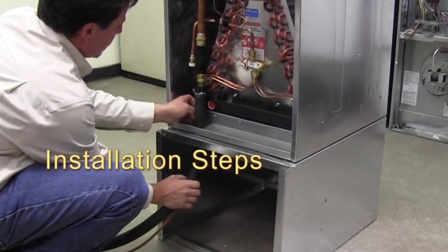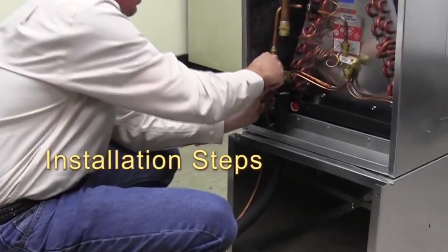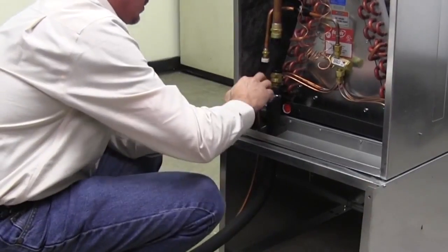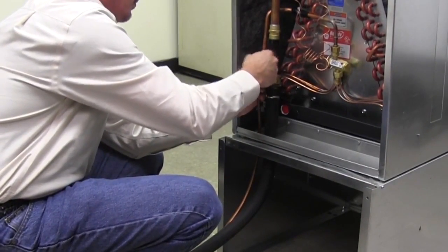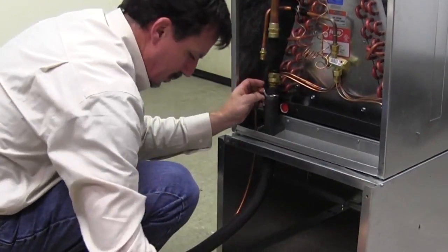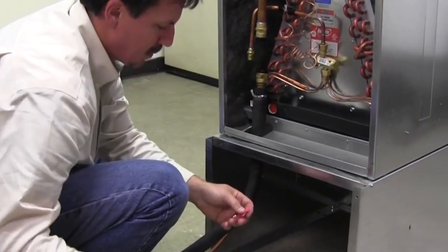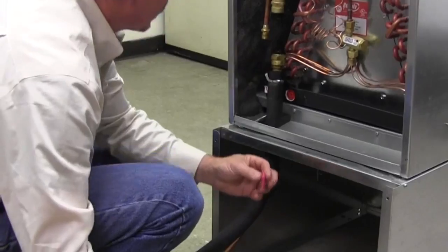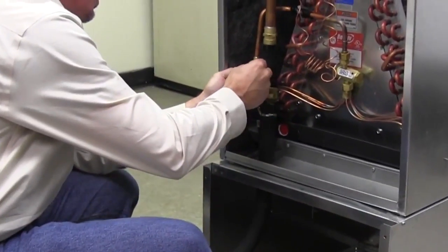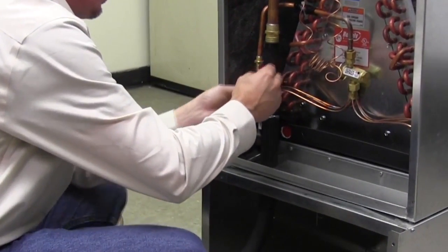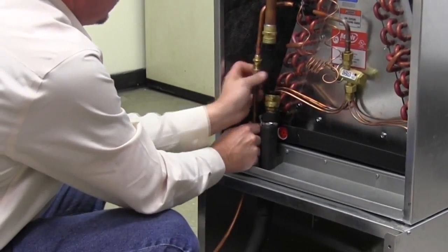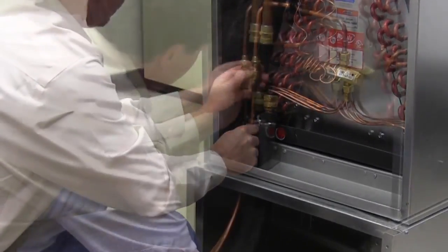With the proper indoor coil in place in the furnace, run the AccuCharge line sets up through the openings provided in the furnace and align with the fittings on the coil. Lubricate the threads and o-ring of the male fittings with the POE oil provided in the packet. Be sure to keep enough oil for the outdoor unit connections. Start the threads by hand with the liquid line first and then the suction line.